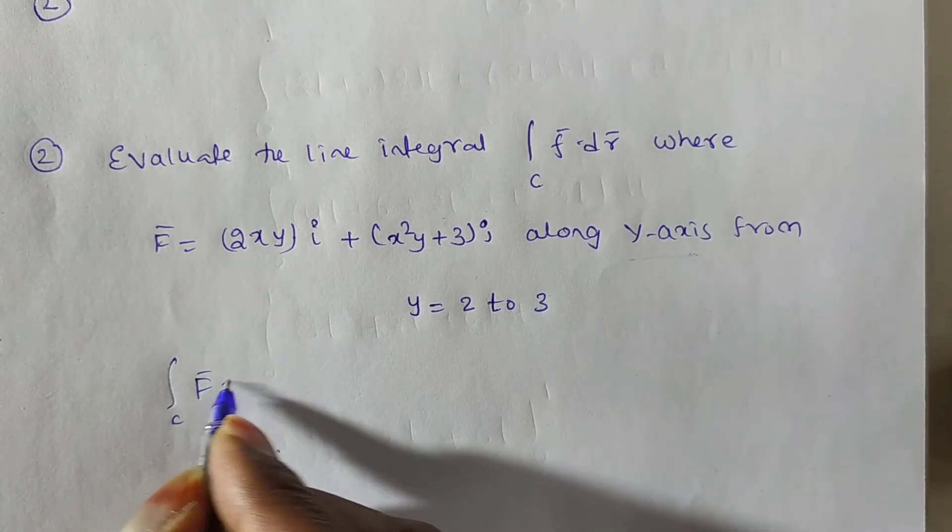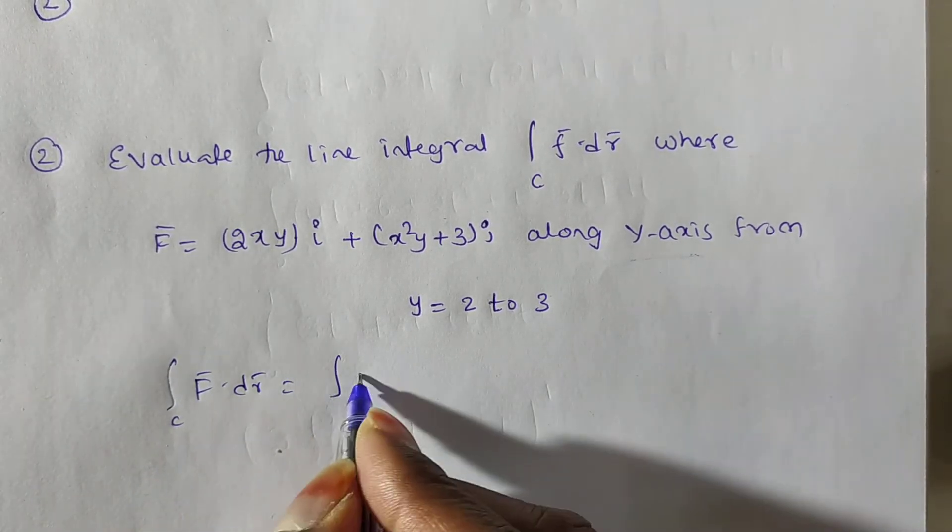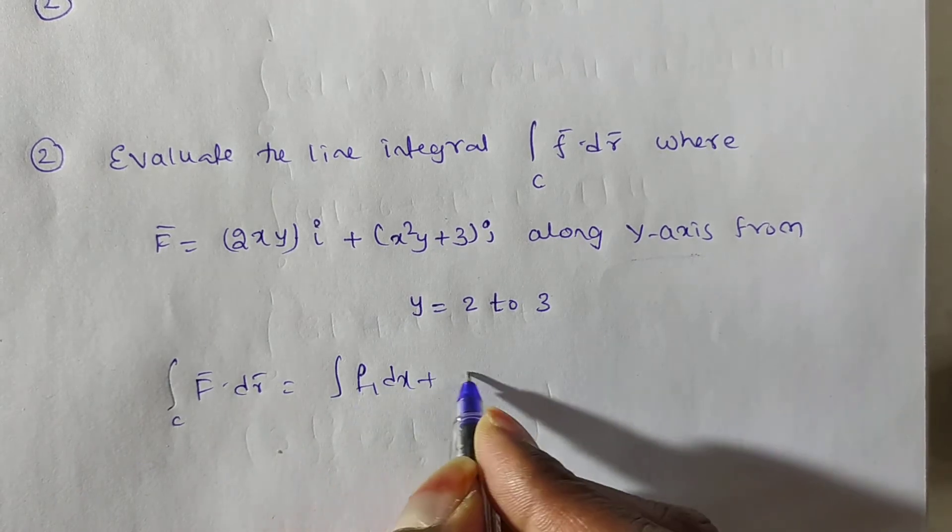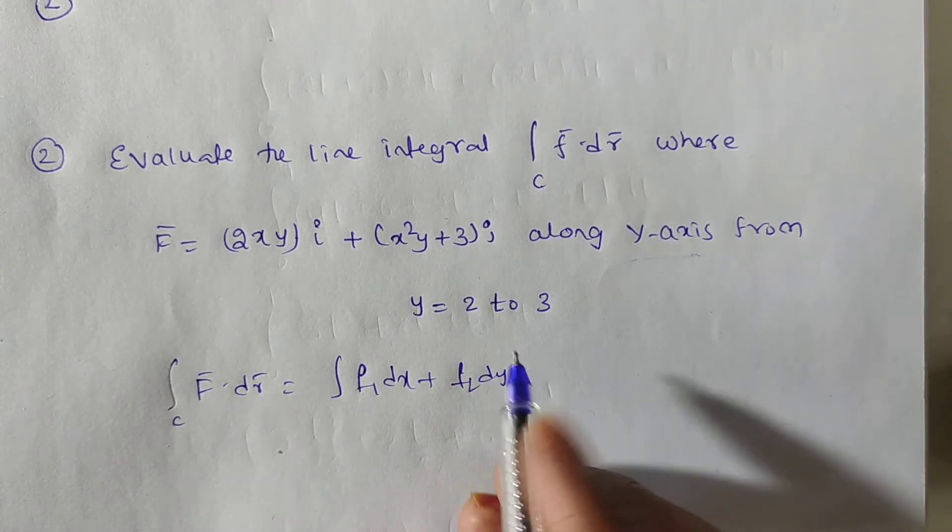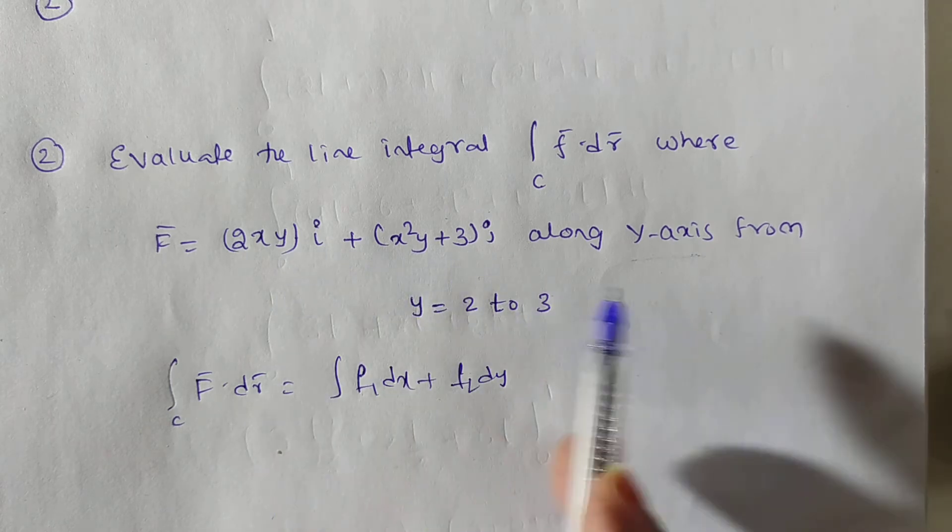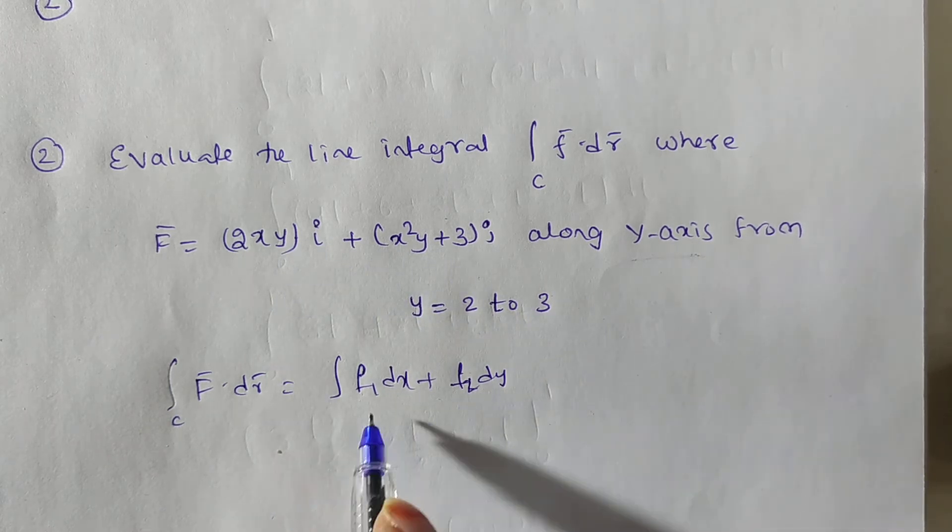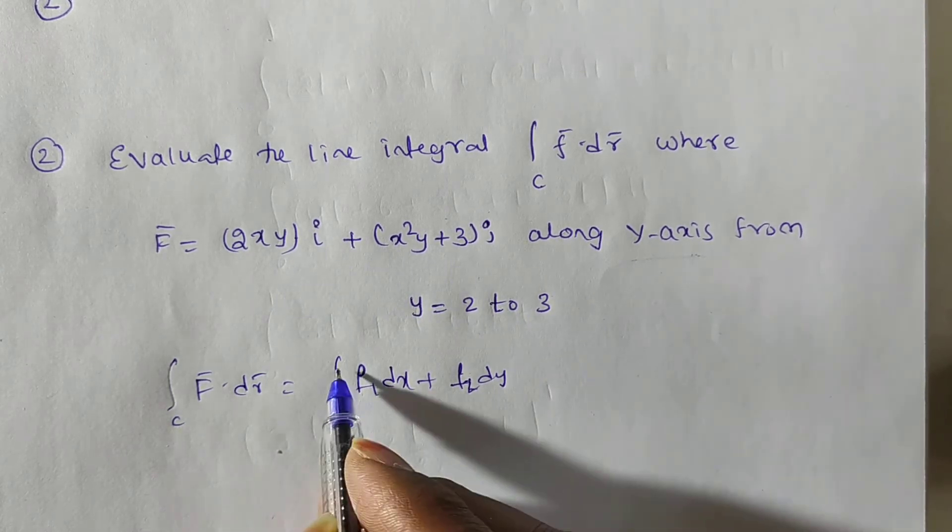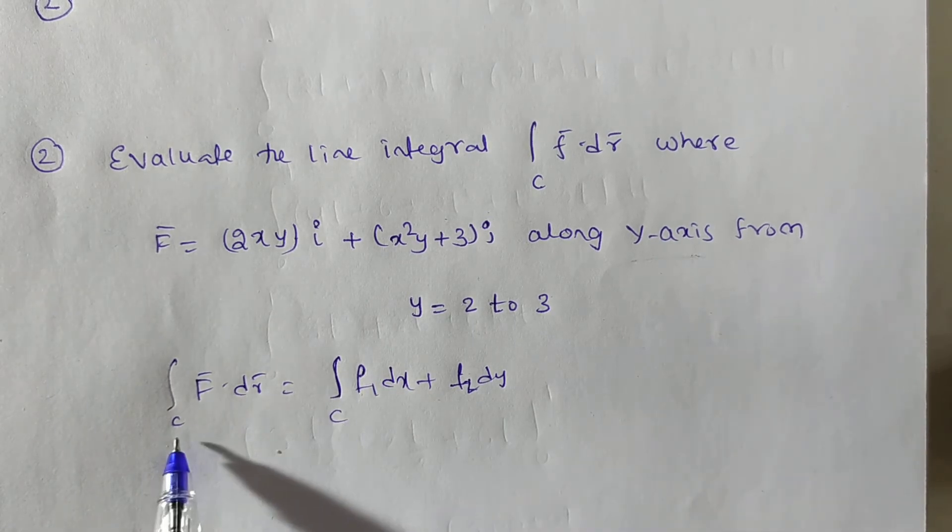We know that integral C f bar dot dr bar equals integral f1 dx plus f2 dy plus f3 dz. But f is containing i,j only, not k. So I am writing here f1 dx plus f2 dy. Here you have to evaluate along the curve C.